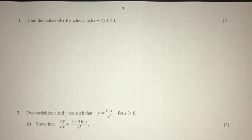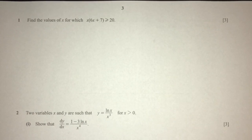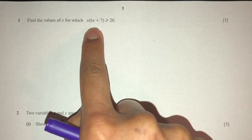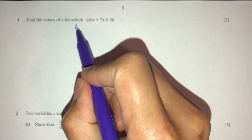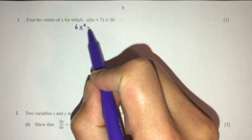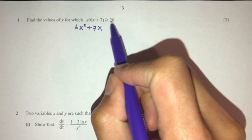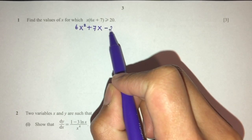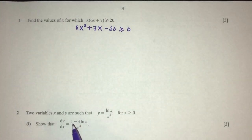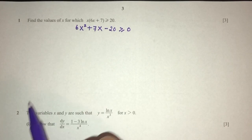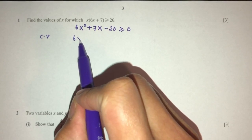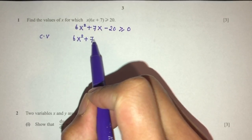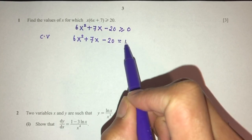Here we have: find the values of x for which this equation is true. The first step — as you can see, here we have 20 and here we have a function. Let's first expand this. So we will have 6x squared plus 7x. And then let's send this number to the left-hand side, becoming minus more or equal to 0.